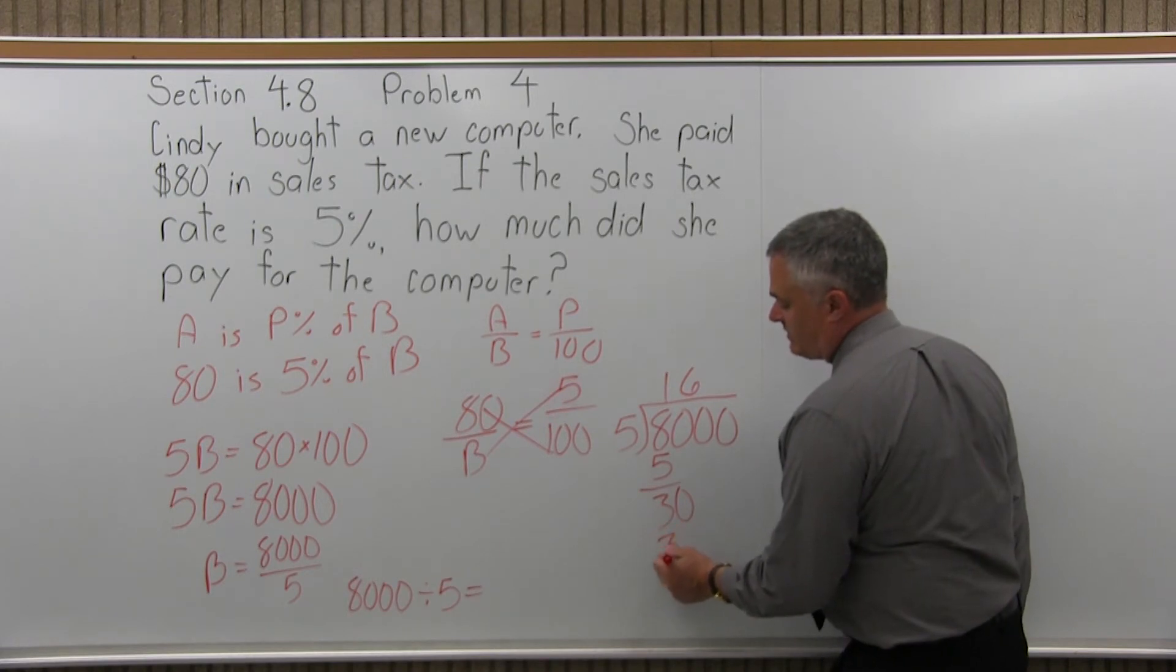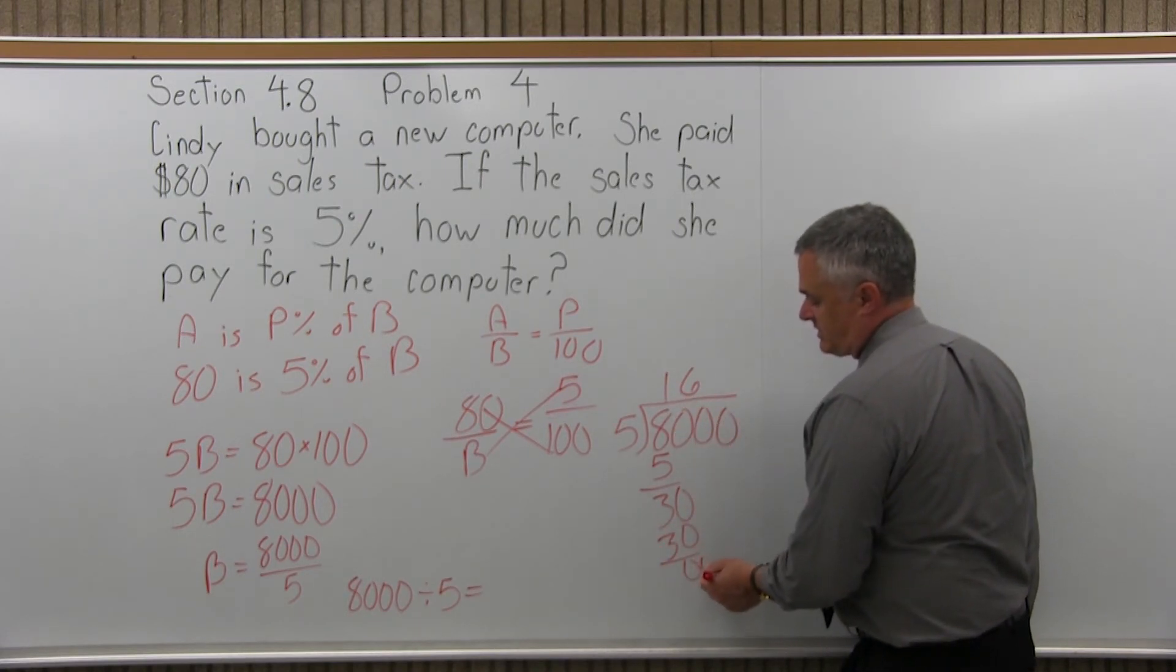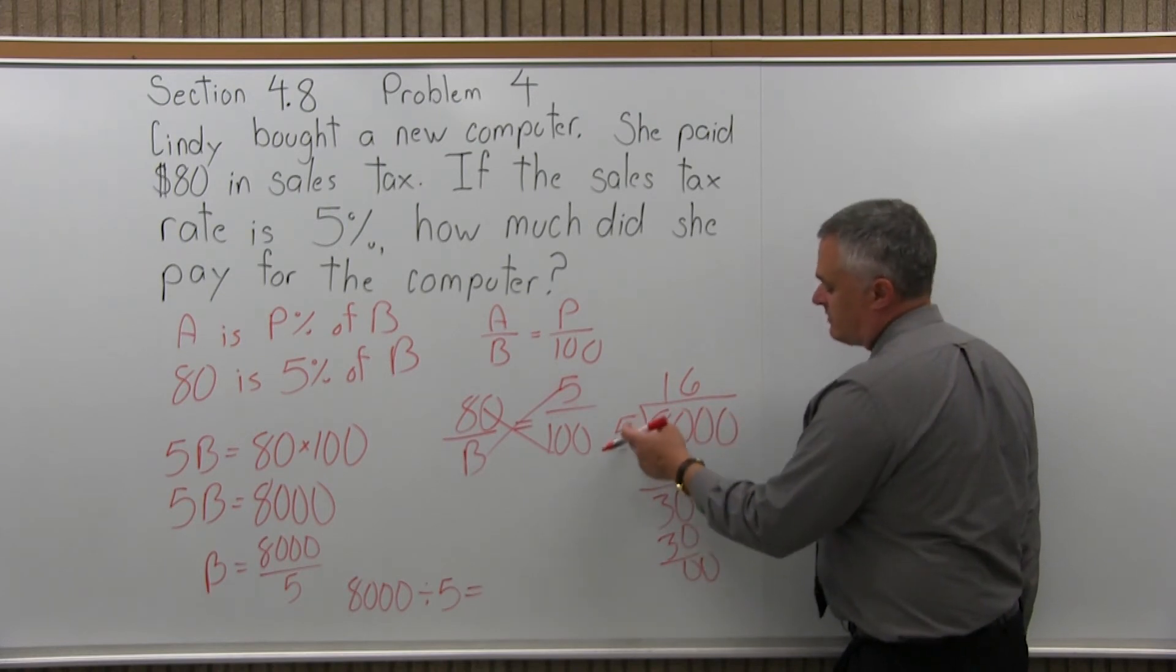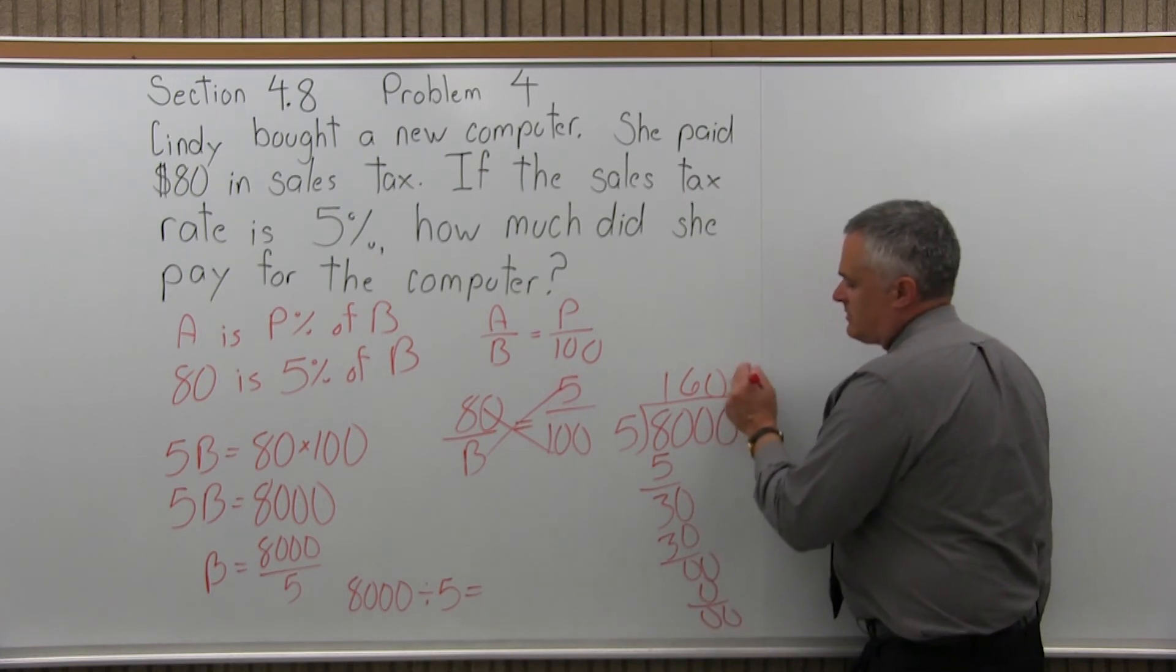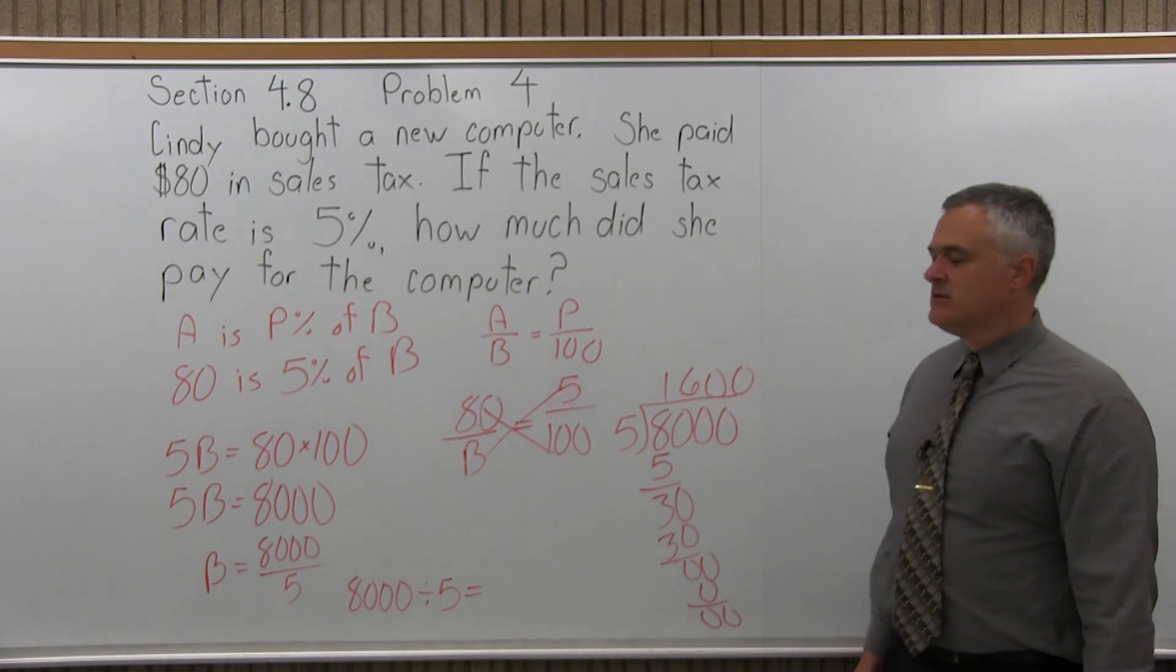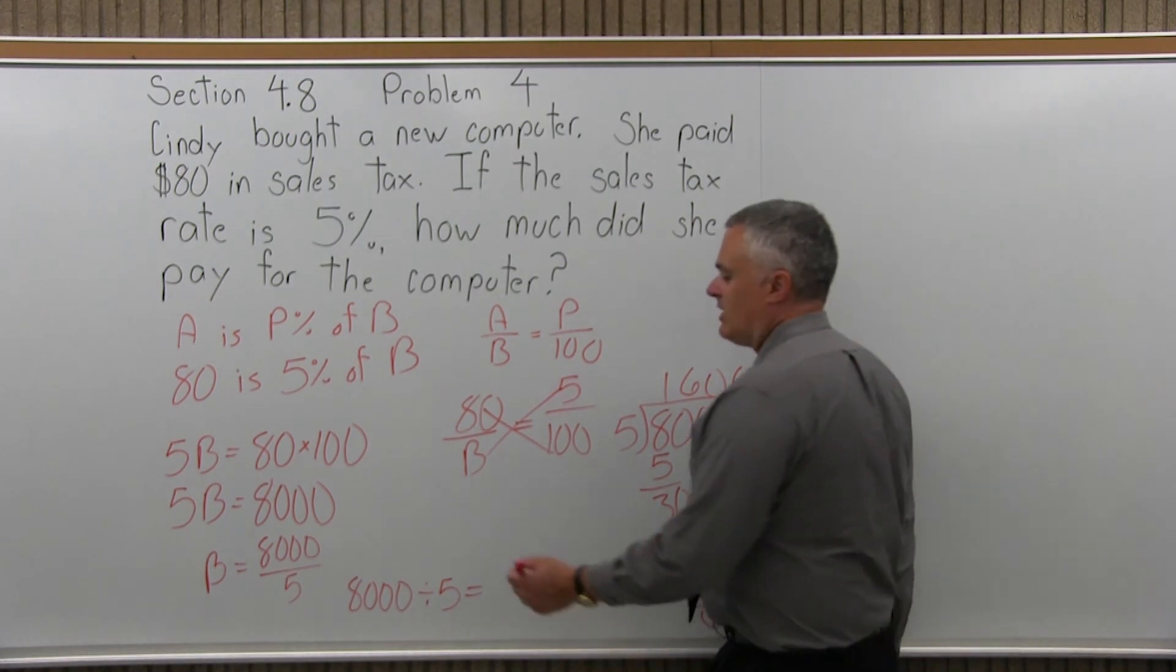And now 5 goes into 30 exactly 6 times. 6 times 5 is 30. 30 minus 30 is 0. So the other zeros are just going to give me a 0. If I bring down the next 0, 5 would go into 0, 0 times. 5 times 0 is 0. You don't really have to finish it to the end, but you'd get two more zeros. So the answer is 1,600.